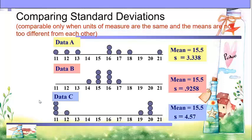Data A, data B, and data C all have an equal mean of 15.5, but their standard deviations differ. In data A, the standard deviation is 3.338, so the scores are not very close to the mean. In data B, the standard deviation is 0.9258, so the scores are closer to the mean. In data C, the standard deviation is 4.57, so the scores are widely far from the mean. The standard deviation of data C is higher than data A and B, while data A is higher than data B.